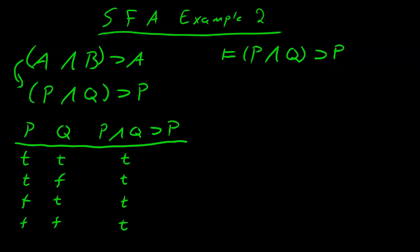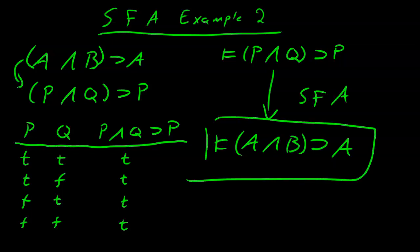Therefore, we can substitute formulas A and B back in for atoms P and Q and obtain the formula A and B implies A, and invoke substitution for atoms to claim that all formulas of this form are valid.